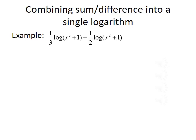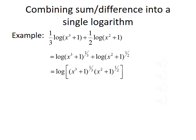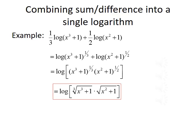We can use the same properties in reverse to combine a sum or difference of logarithms into a single logarithm. For example, one-third times log of (x cubed plus 1) plus one-half times log of (x squared plus 1). Using the power property, we move one-third and one-half into the exponent positions: log of (x cubed plus 1) to the one-third plus log of (x squared plus 1) to the one-half. Using the multiplication property, we combine them into log of [(x cubed plus 1) to the one-third times (x squared plus 1) to the one-half]. Finally, rewriting the fractional exponents as radicals gives log of [the cubed root of (x cubed plus 1) times the square root of (x squared plus 1)].